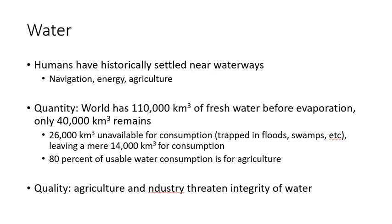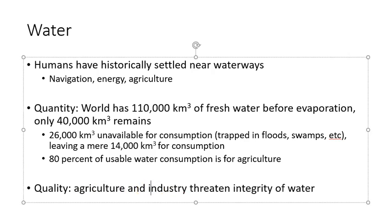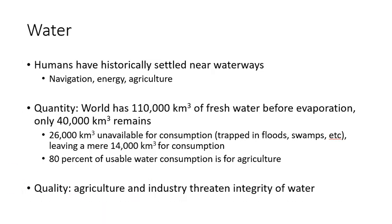Of that usable water, 80% is used for agriculture — most of it applied to fields to grow food. Beyond quantity, there is also the issue of quality. The quality of water has been undermined by agricultural practices, as pesticides and other chemicals applied to fields have run off into different water sources. Similarly, industry has had effluent flowing into bodies of water for several decades, undermining water quality and in some cases leading to dead bodies of water.